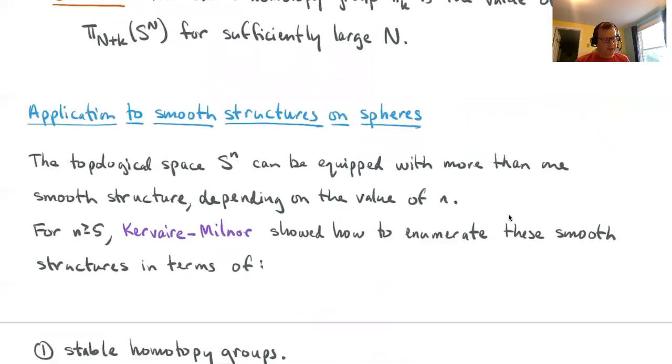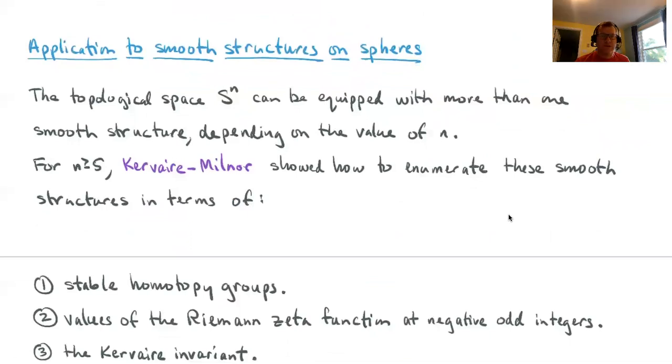Let's take a short break here and look at some applications. The one application I'm going to talk about has to do with differentiable manifolds. Consider the space S^n, the sphere, dimension n. It turns out this sphere can be equipped with more than one smooth structure, depending on the value of n. This is not at all an intuitive fact, but nevertheless true.